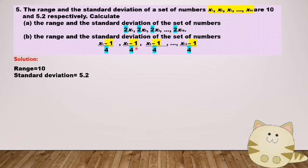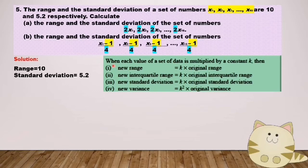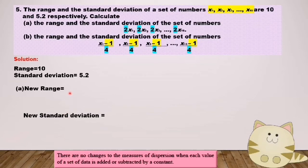After that, I will compare this set of data with the original set of data. After comparing, every number is multiplied by 2. So when each value of a set of data is multiplied by a constant k, the new range equals k times the original range. New standard deviation also equals k times the original standard deviation. The constant is 2, so the new range is 2 times original range 10.